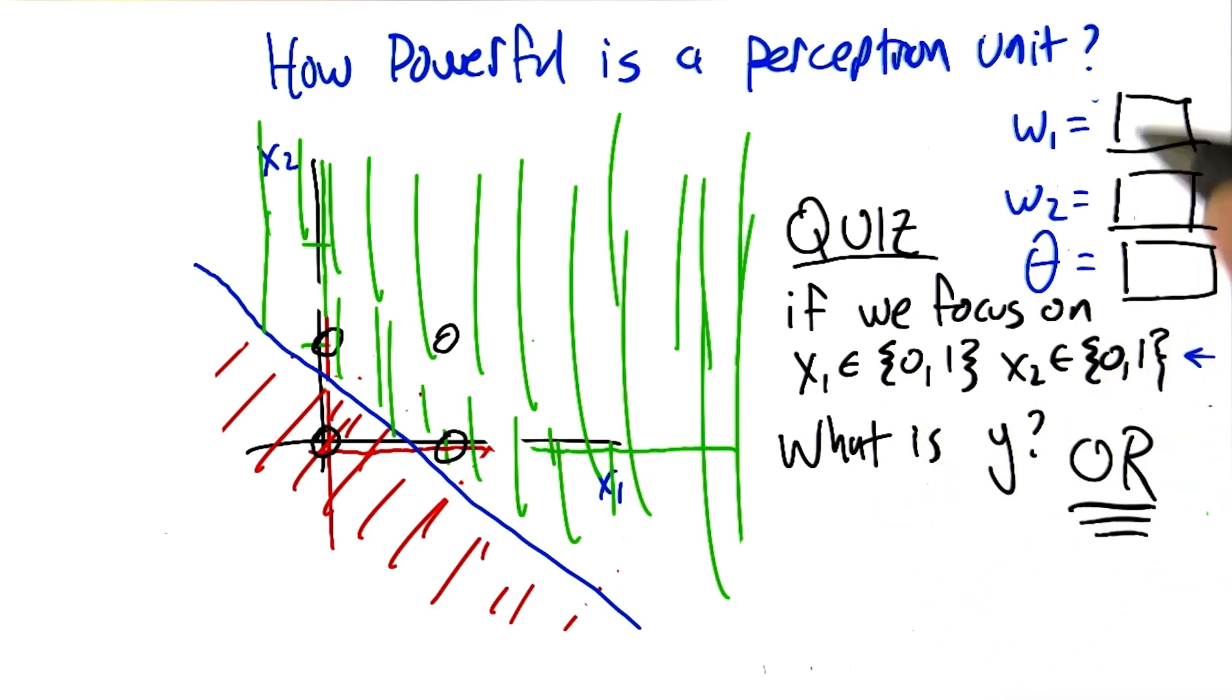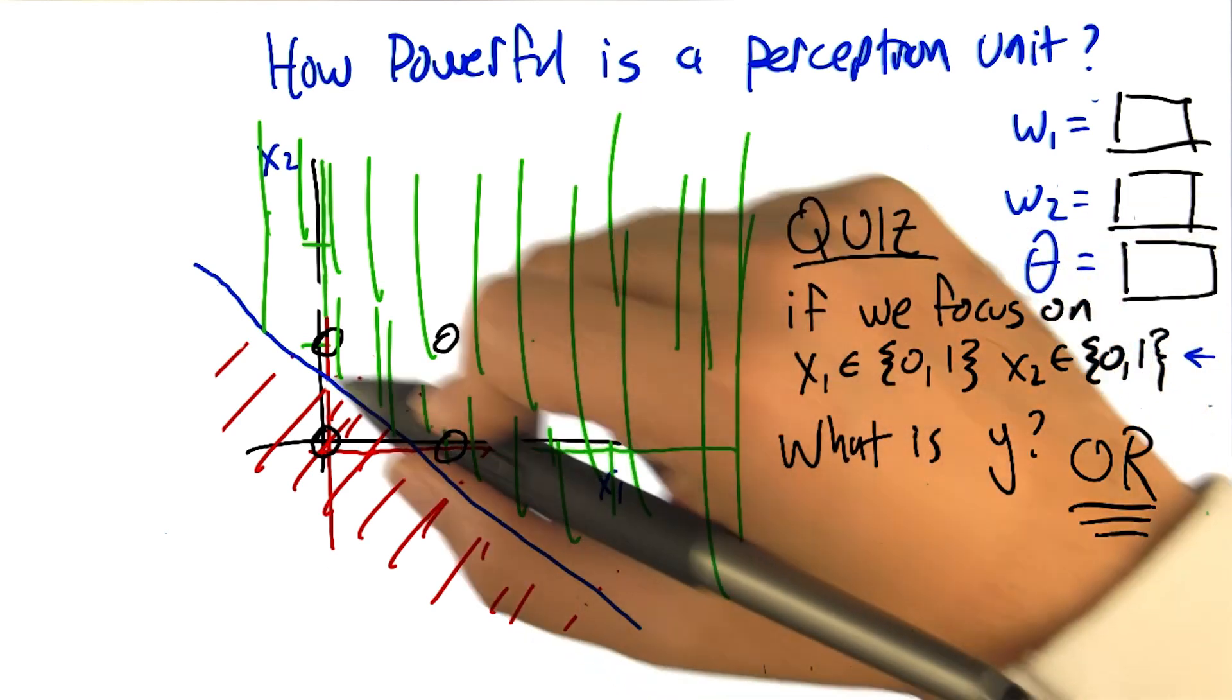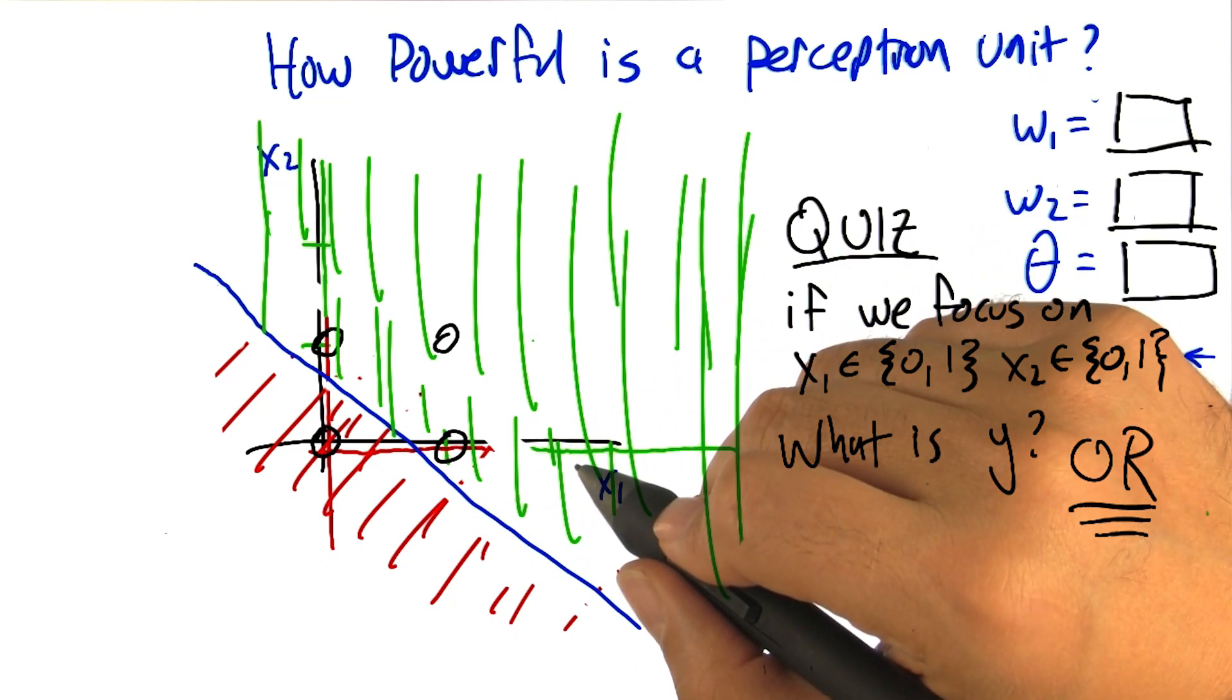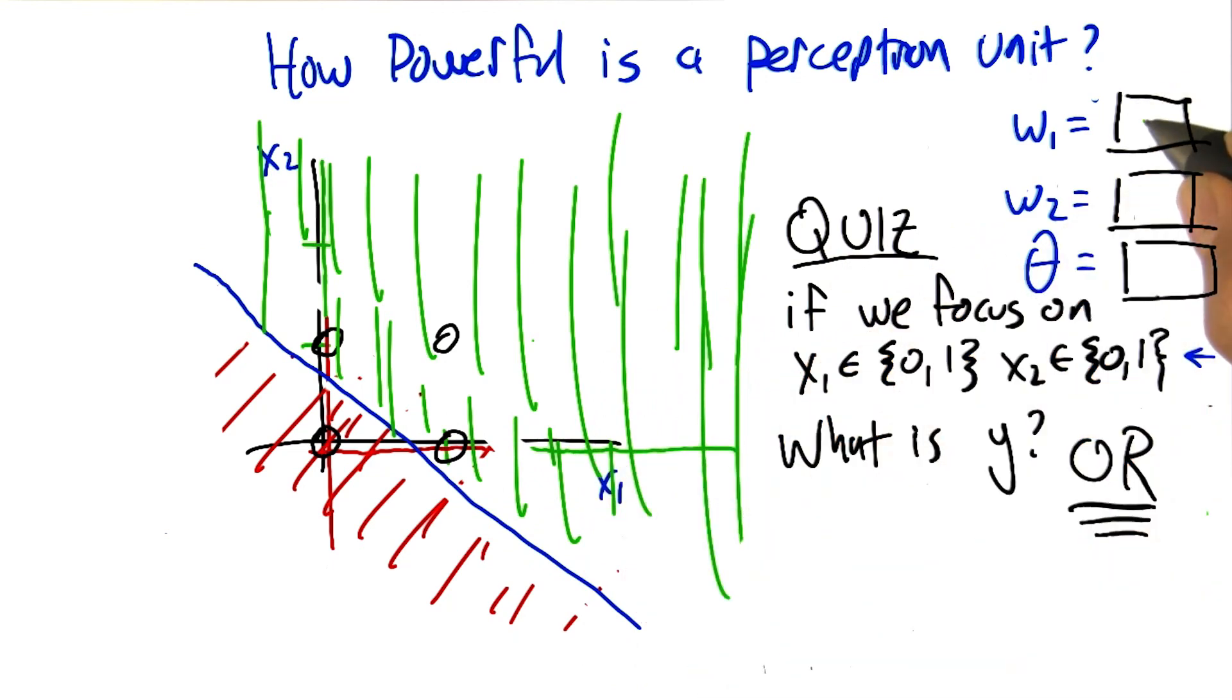Well, since we want it to be the case that either x2 or x1 being one gets you above the line, then we need a threshold and a set of weights that put either one of them over. You don't have to have both of them, you only need one of them.